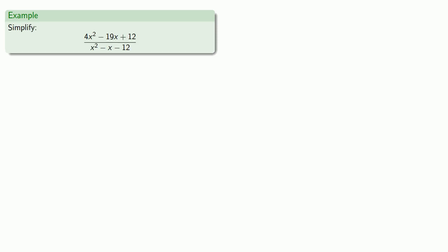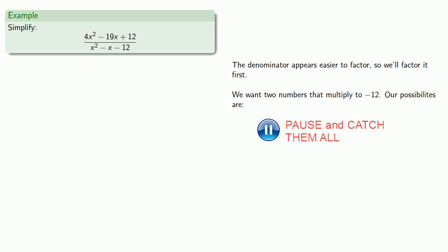Or let's take something like this. We can factor either the numerator or the denominator, but the denominator appears to be easier to factor, so we'll factor it first. We need two numbers that multiply to minus 12. Our possibilities are... But we don't know which one will work, so we'll have to try them out until we get something that multiplies to what we want. So we'll try, how about x plus 1 times x minus 12?